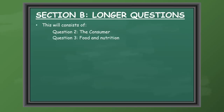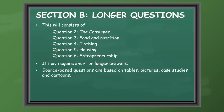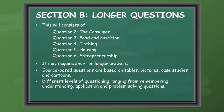Section B will be your longer questions, and this will consist of question 2, which is the consumer; question 3, food and nutrition; question 4, clothing; question 5, housing; question 6 will be entrepreneurship. All of this will require short or longer answers. There will be source-based questions that will be based on tables, pictures, case studies and cartoons. All questions will have different levels of questioning that will range from remembering, understanding, application and problem solving.